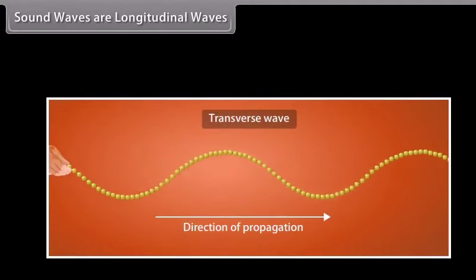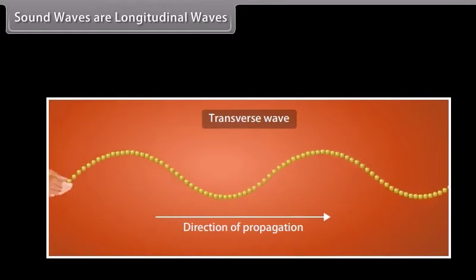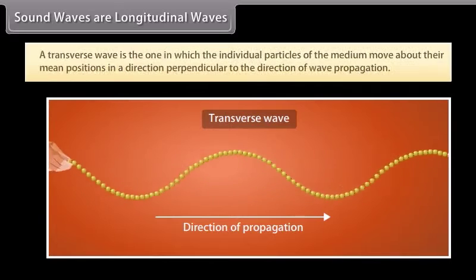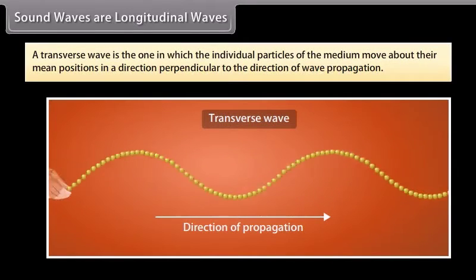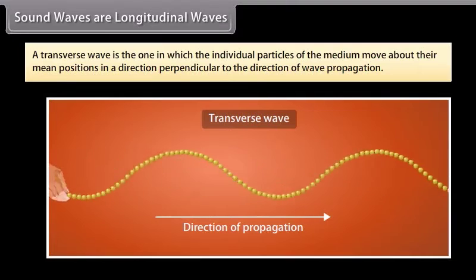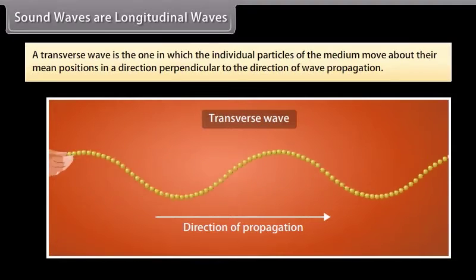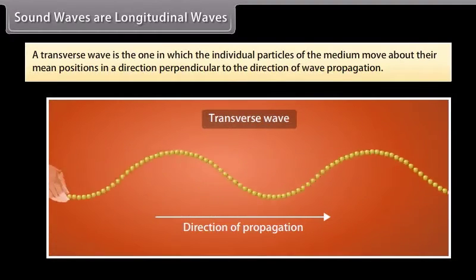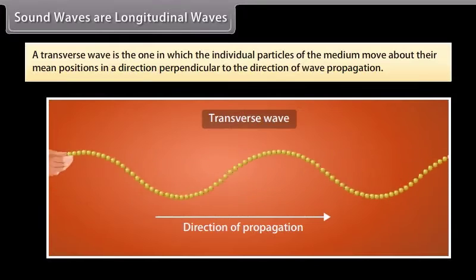There is also another type of wave called a transverse wave. A transverse wave is the one in which the individual particles of the medium move about their mean positions in a direction perpendicular to the direction of wave propagation.